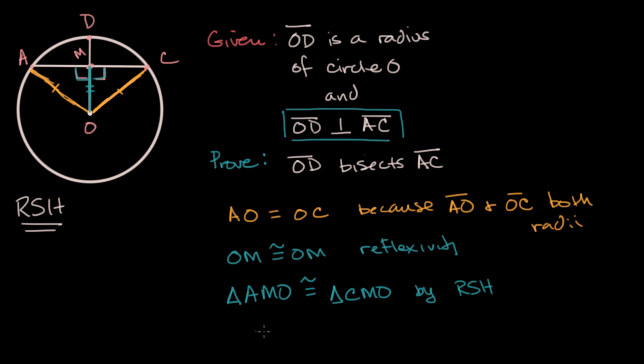So therefore, we know that segment AM is going to be congruent to segment CM, that these are going to have the same measure. And if they have the same measure, we have just shown that M is the midpoint of AC, or that OD bisects AC. Therefore, OD bisects segment AC. And we're done.